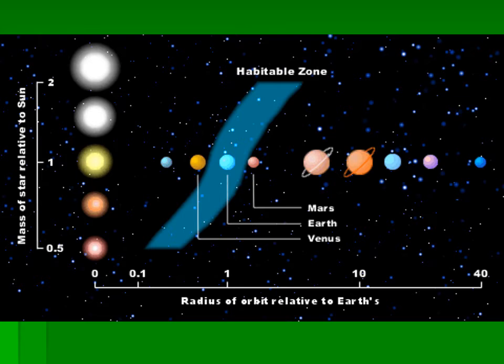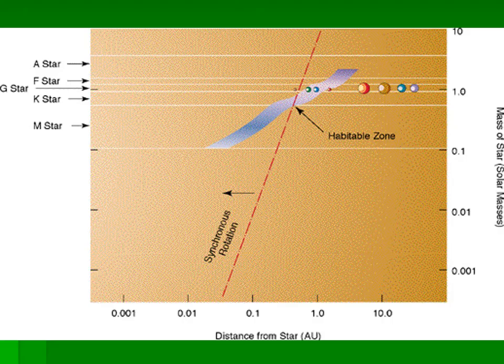But for the different size stars, for cooler stars, remember lower mass stars are going to be cooler stars like red dwarves. You have to be very close to being in the habitable zone. For stars that are hotter, you can be farther away and still be in the habitable zone. And so, the size of the star matters.